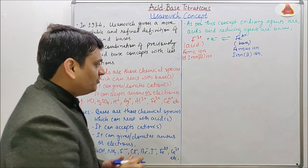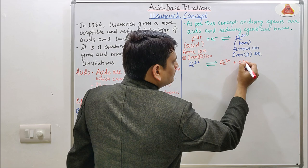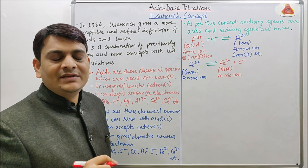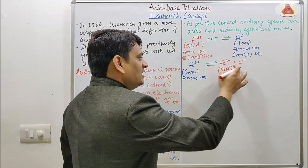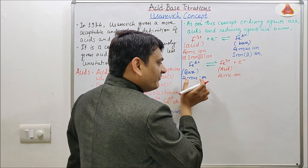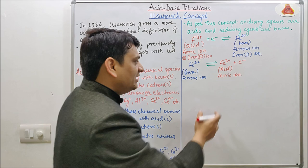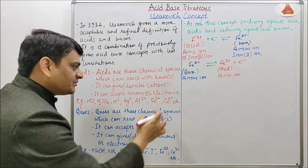Now coming to the example of a base. Taking the example of Fe²⁺: Fe²⁺ acts as a base because it is donating one electron, converting from Fe²⁺ to Fe³⁺ — that is, from ferrous to ferric. According to the definition, a base can give or donate anions or electrons, so Fe²⁺ acts as a base.